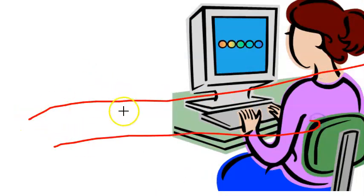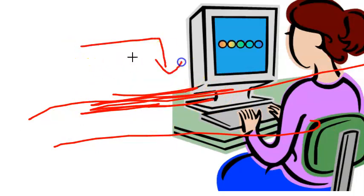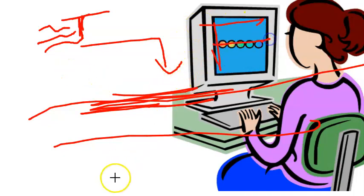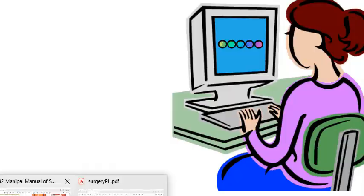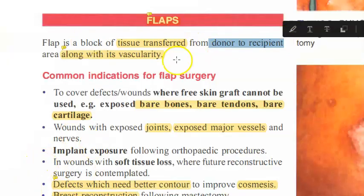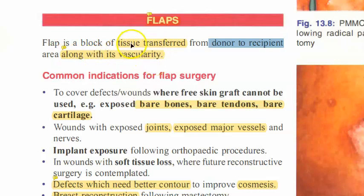But what if it is a bare wound like a bone or a tendon where there is no vascularization? There you will have to put a complete tissue, and this tissue will come with its own vascularization. That is what is called a flap — basically you are taking a block of tissue and transferring it from the donor to the recipient along with its vascularity.